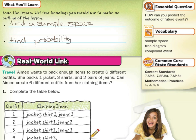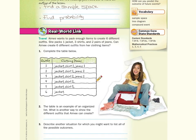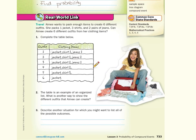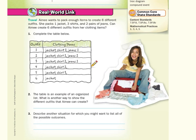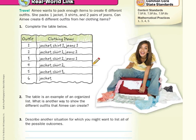Looking at our real world link: Amy wants to pack enough items to create six different outfits. She packs one jacket, three shirts, and two pairs of jeans. Can Amy create six different outfits from her clothing items? We'll complete the table below. One outfit could be jacket, shirt one, and jeans one. Another: jacket, shirt one, jeans two. Then jacket, shirt two, jeans one. Jacket, shirt two, jeans two. Then jacket, shirt three, jeans one, and jacket, shirt three, jeans two. This table is an example of an organized list.